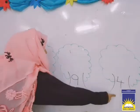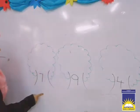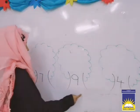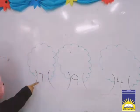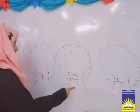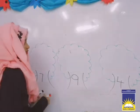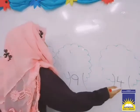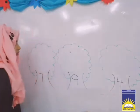So you can see the numbers I have written here. Which number is this? 7. Which number is this? 9. Which number is this? 4. Okay?